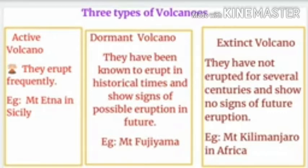The second categorization is dormant volcanoes. They have not erupted in recent historical periods but erupted millions of years before. They are regarded as sleeping volcanoes and can become active at any time. For example, Mount Kilimanjaro of Africa and Mount Vesuvius in Italy have erupted in the recent past but currently show no chance of eruption, so they are considered dormant volcanoes.